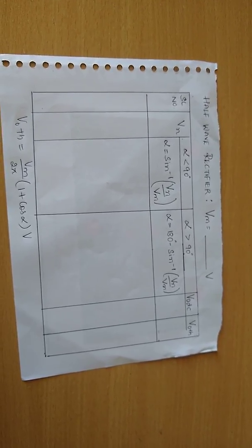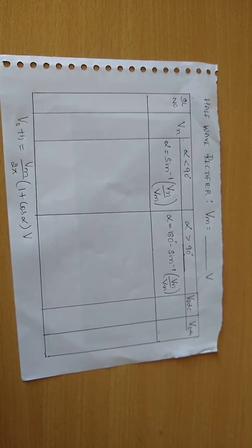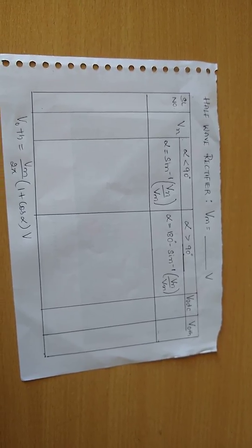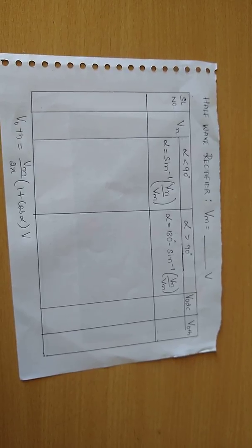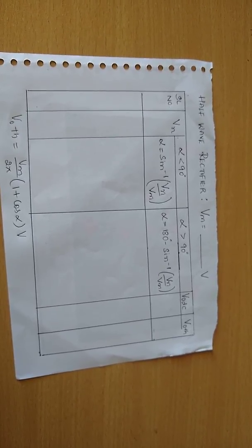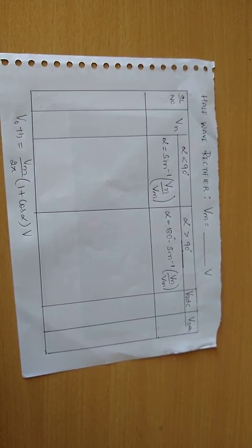A graph of V0 versus alpha, V0 versus beta and I0 versus alpha, I0 versus beta and power DC versus alpha and output power DC versus beta are to be plotted.